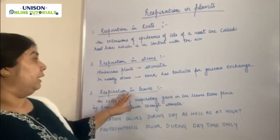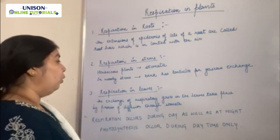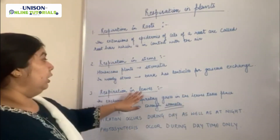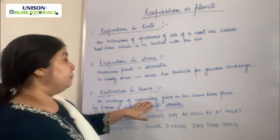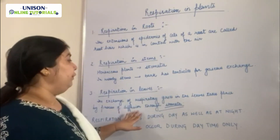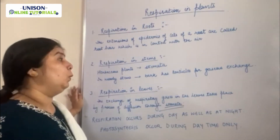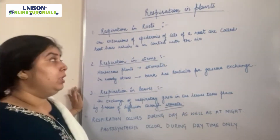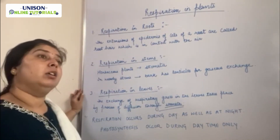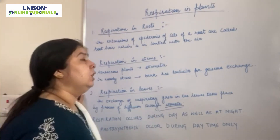Next, we have respiration in leaves. Leaves also have stomata. The exchange of respiratory gases in leaves takes place by the process of diffusion through stomata — small pores present in the leaves through which all gaseous exchange takes place, meaning O2 diffuses in and CO2 diffuses out.